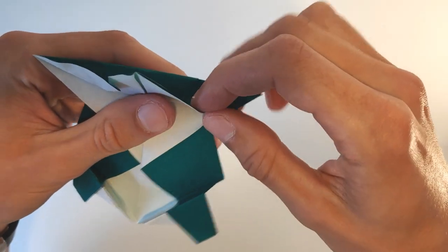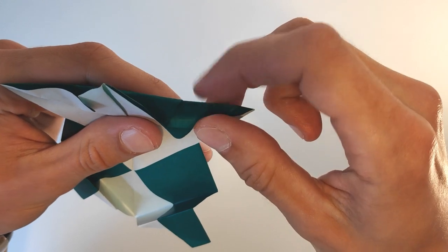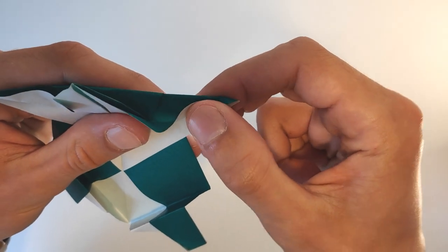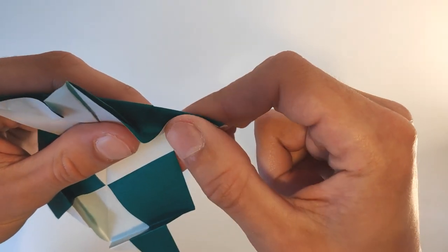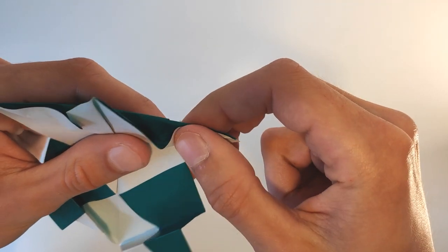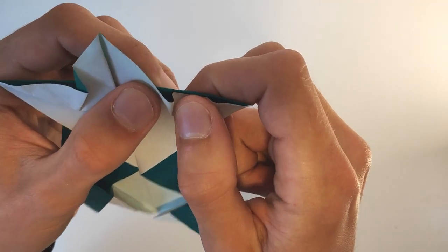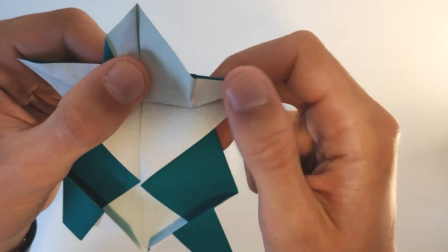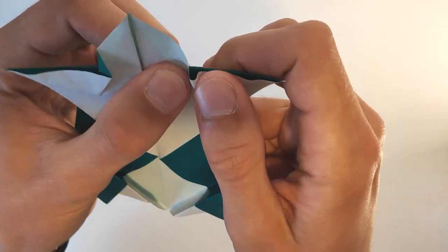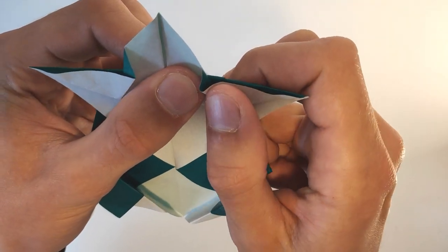I'll do the same thing on the right side. So first, fold the paper up like this. The paper does not lie flat. So fold the flap to the left.